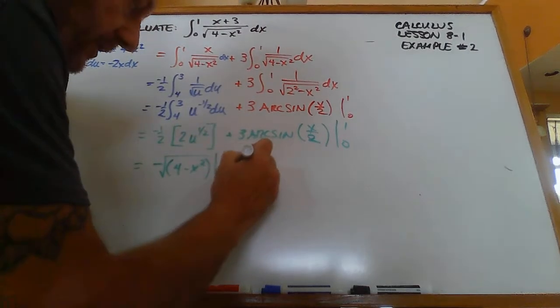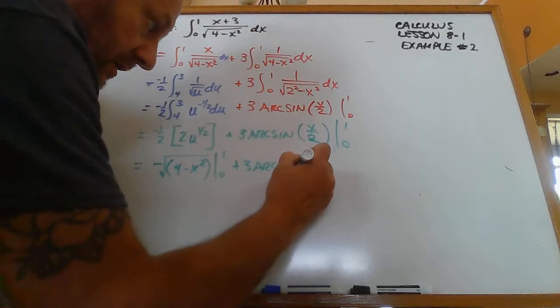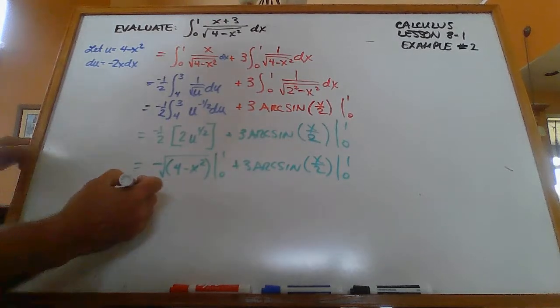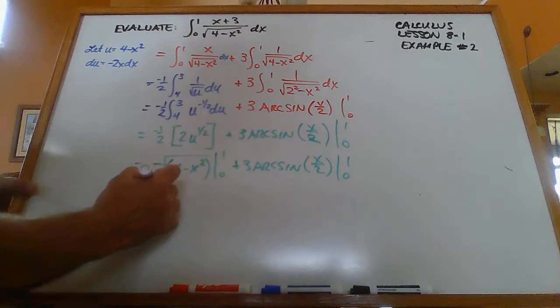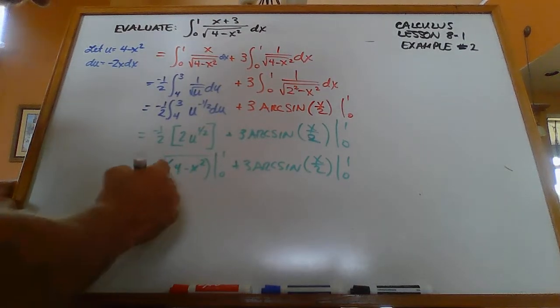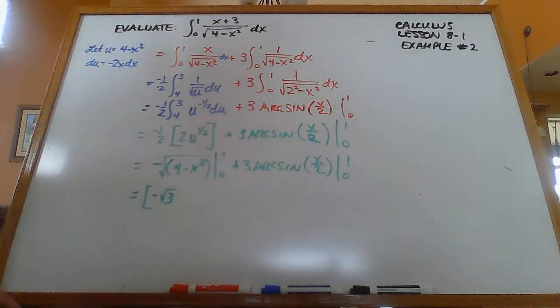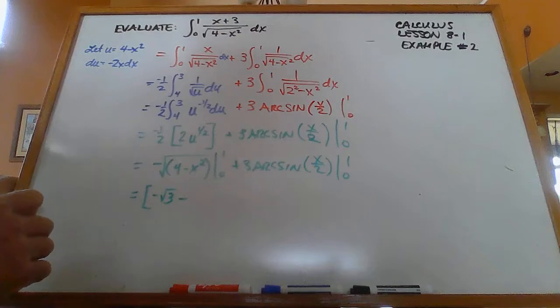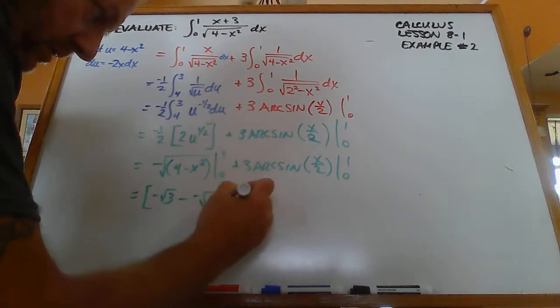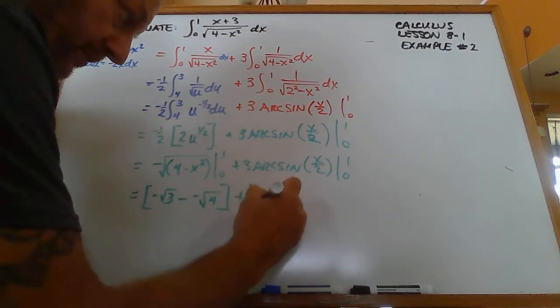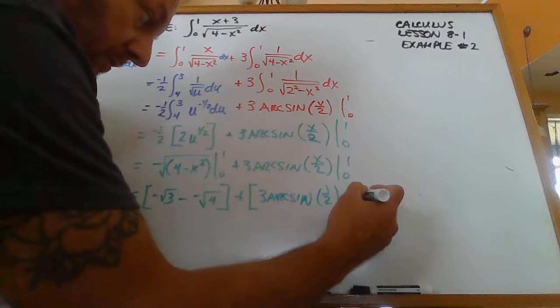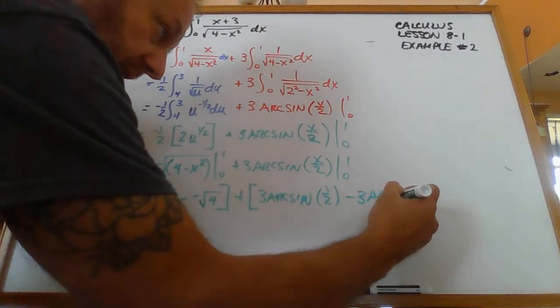Plus 3 arc sine x over 2, evaluated from 0 to 1. So in the first part here, if I plug in the 1, I get negative square root of 4 minus 1, that's 3. Minus, plug in the 0, I get negative square root of 4, plus 3 arc sine of 1 half minus 3 arc sine of 0.